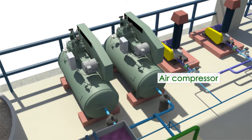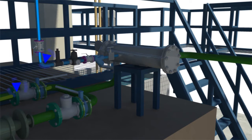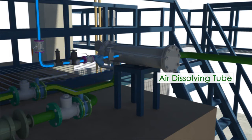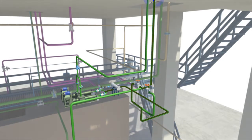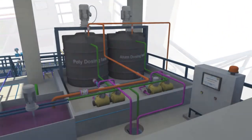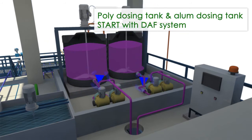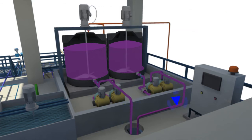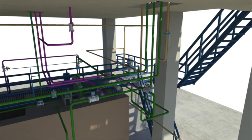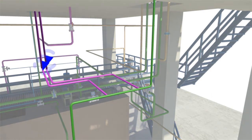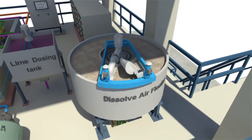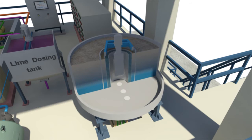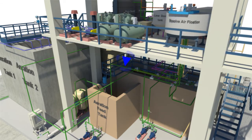The output of the DAF high-pressure pump and air compressor is connected to an air dissolving tube, which further leads to the dissolved air flotation system. Both polymer dosing and alum dosing are combined with the outlet of the DAF pump.